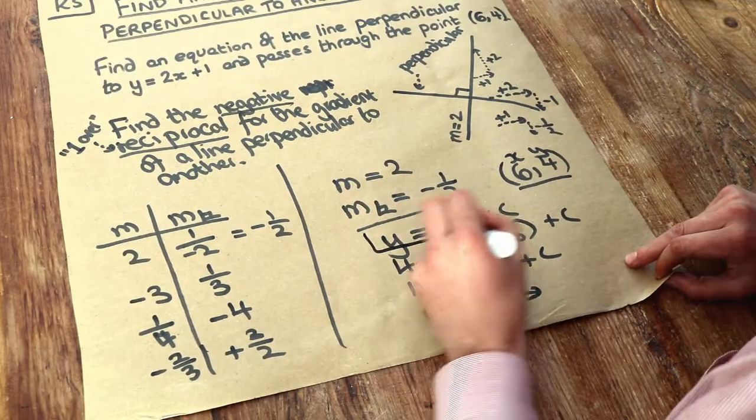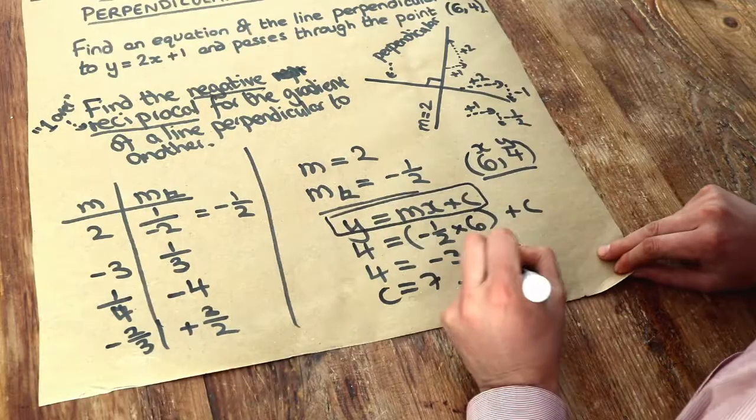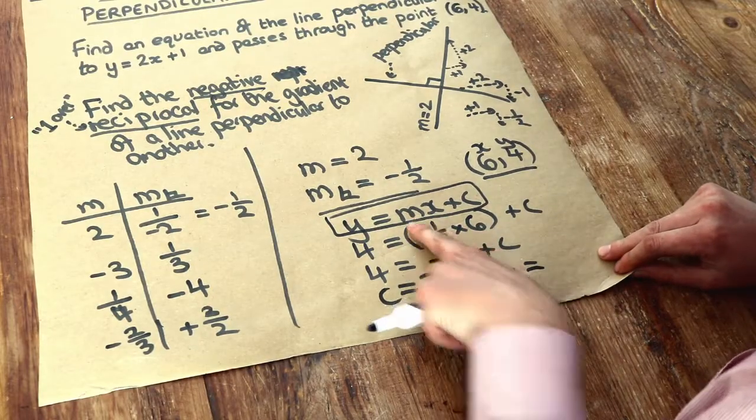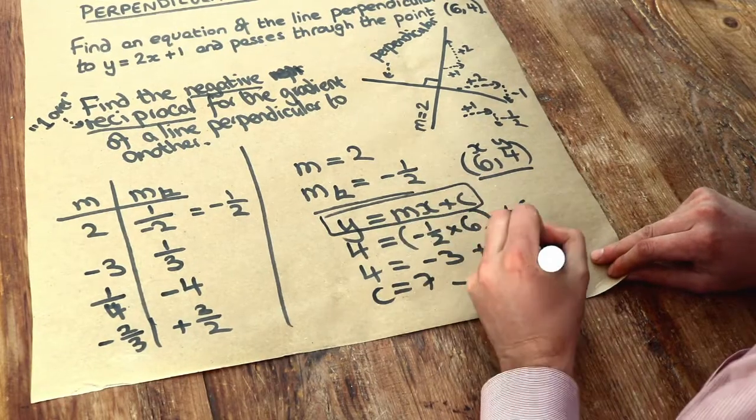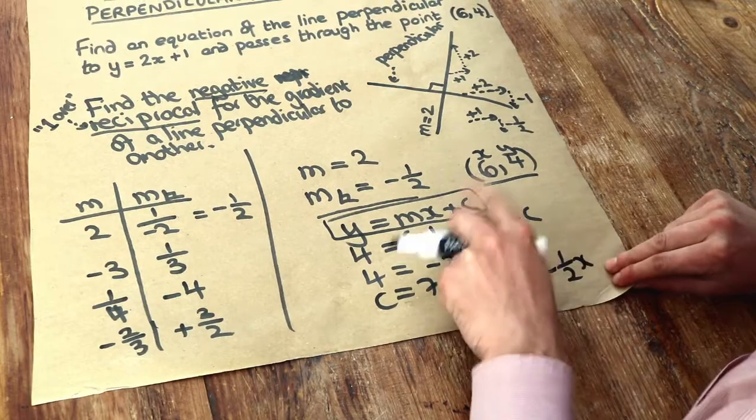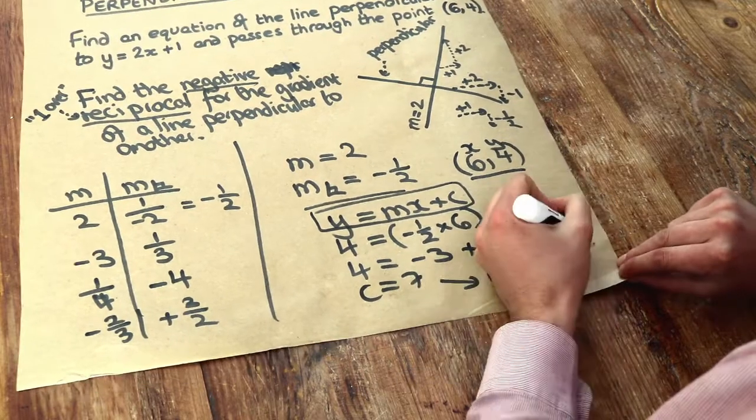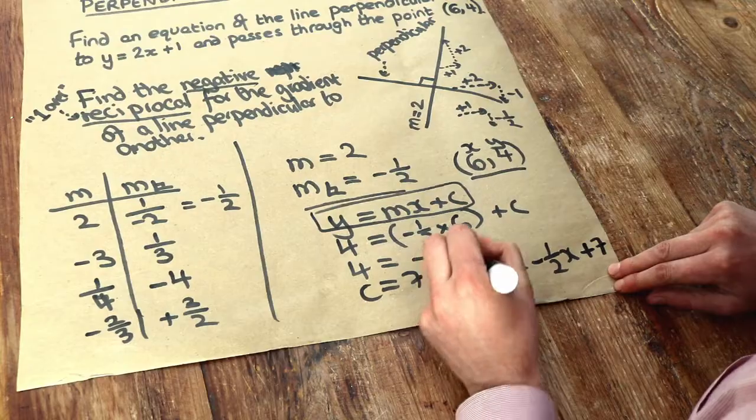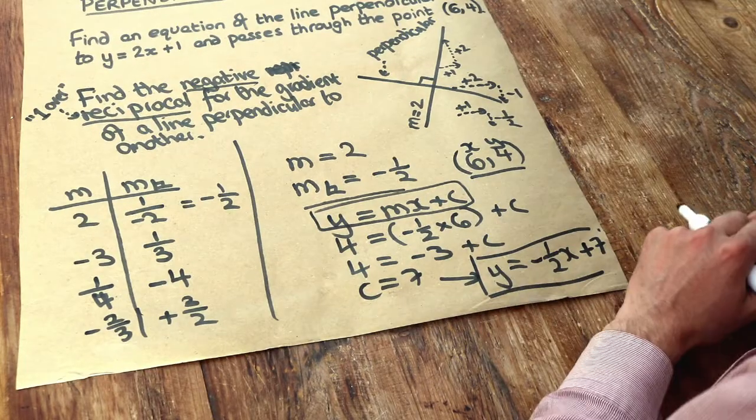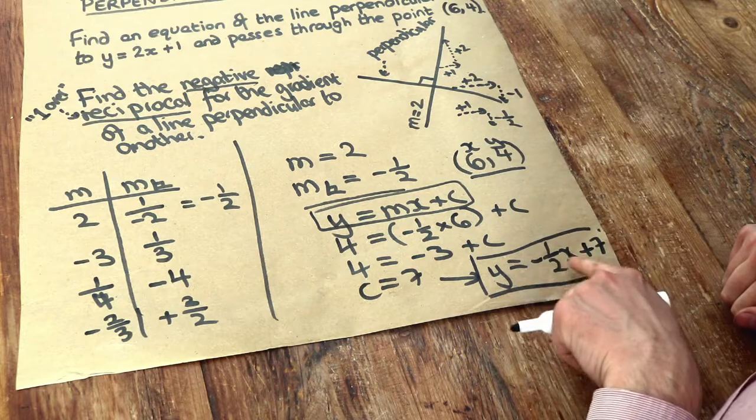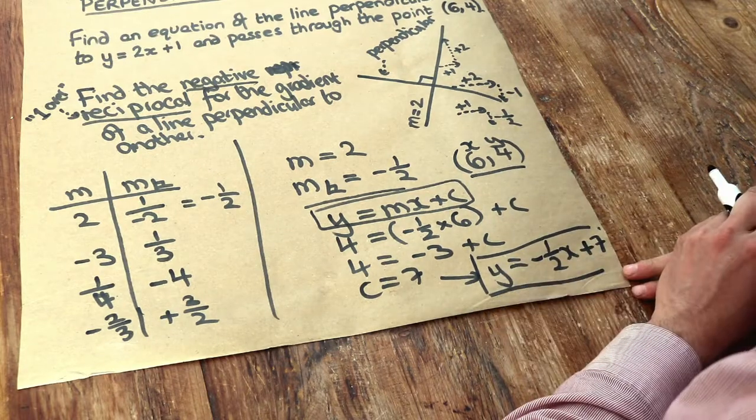If y equals mx plus c, then y equals m which is minus half, so minus half x plus c. We worked out that c was 7, and that is the equation of our straight line. That is the final answer. Remember when you have an equation of a straight line it should have a variable x and a variable y in it.